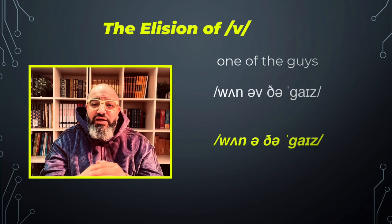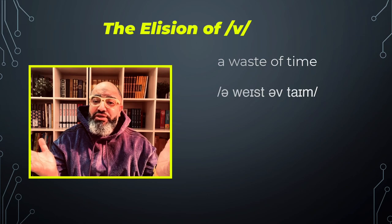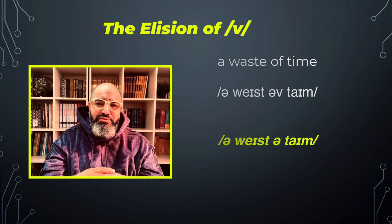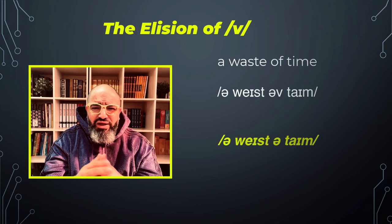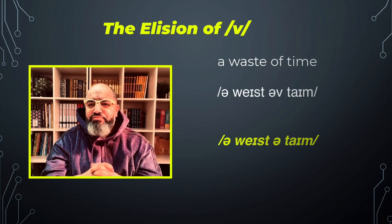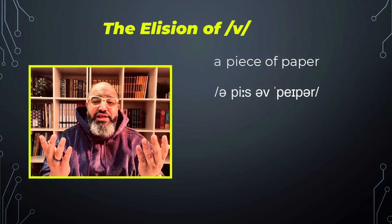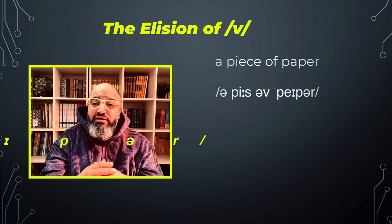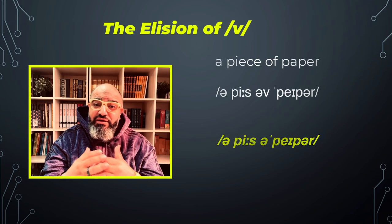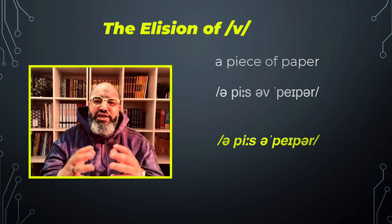Another example: 'a waste of time' — in connected speech it would be 'a wasted time,' 'a wasted time.' Like you might say: 'Why are you doing this? This is a wasted time.' One more example: 'a piece of paper' — again in connected speech you would say 'a piece-of-paper,' 'a piece of paper.' So when you're speaking quickly you can say: 'I need a piece of paper.'